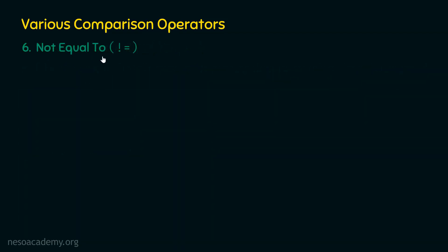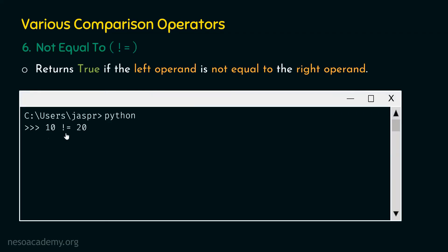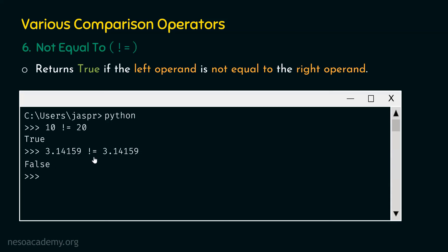The sixth operator is not equal to (!=). The not equal to operator returns true if the left operand is not equal to the right operand — it works opposite to the equal to operator. For example, 10 != 20 gives true because 10 is not equal to 20. If we type 3.14159 != 3.14159, we get false, because these two operands are exactly equal, so the not equal to condition is not satisfied.